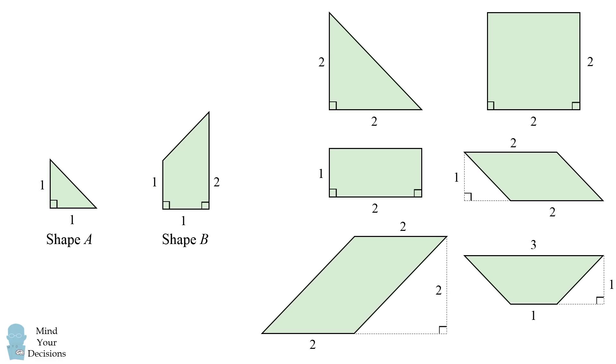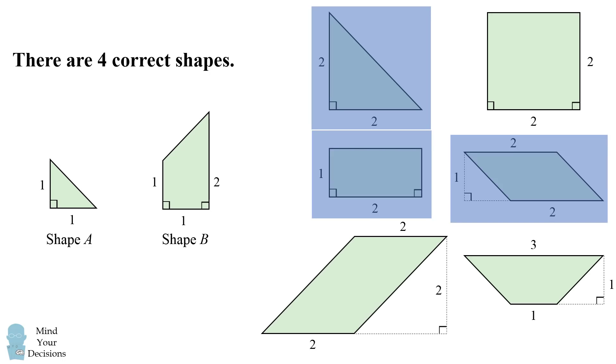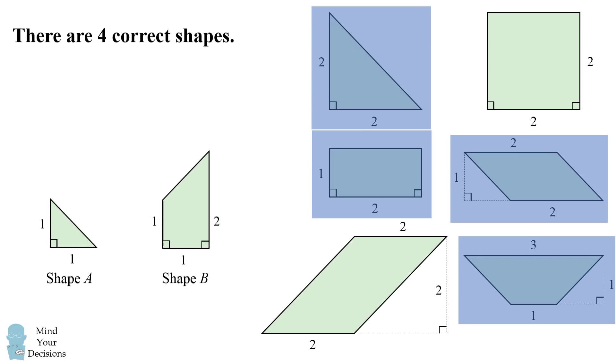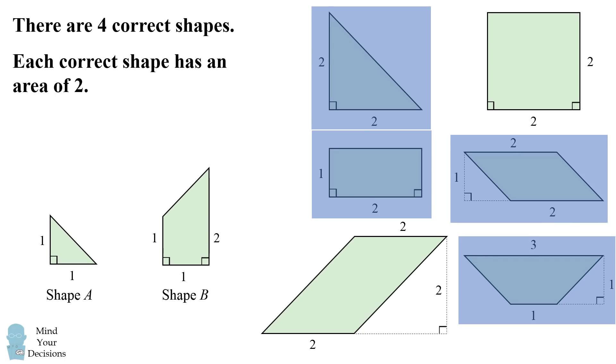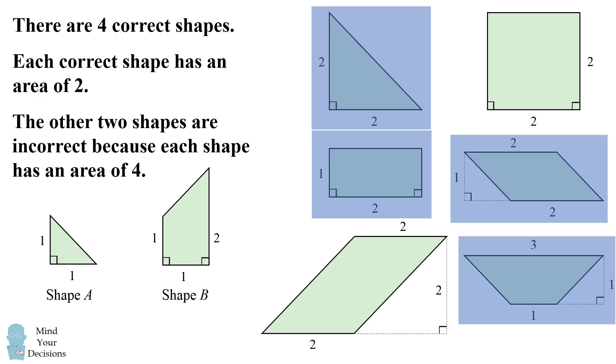So, to summarize, there are four correct shapes. This right triangle, this rectangle, this parallelogram, and this trapezoid. Furthermore, each correct shape has an area of 2. The other two shapes are incorrect because each shape has an area of 4.